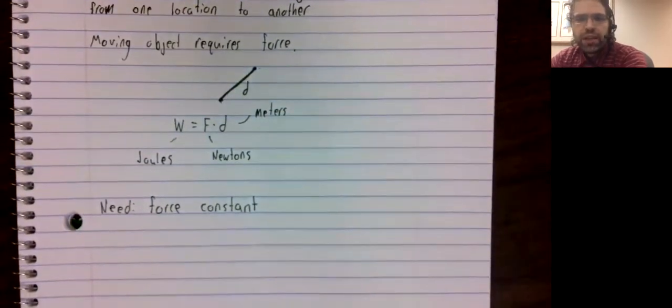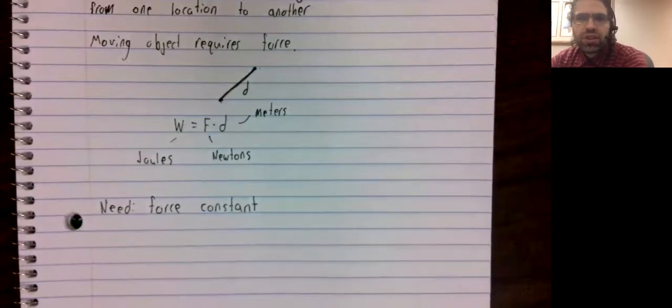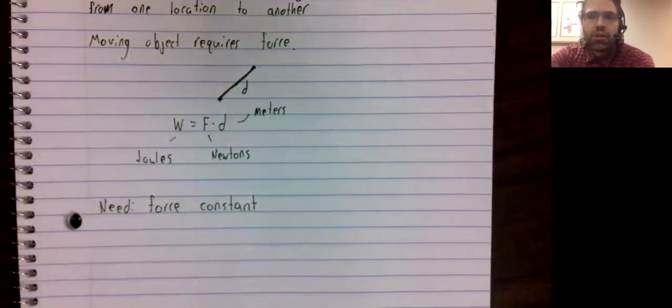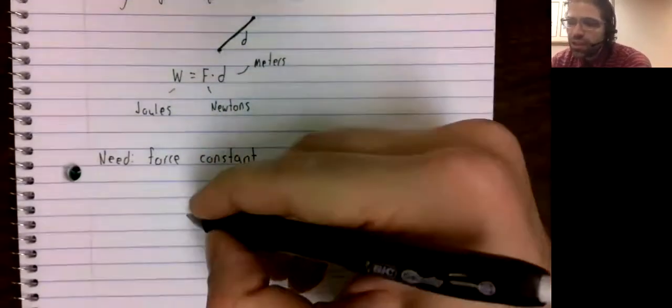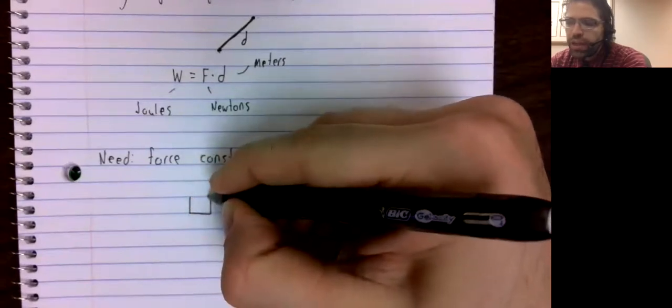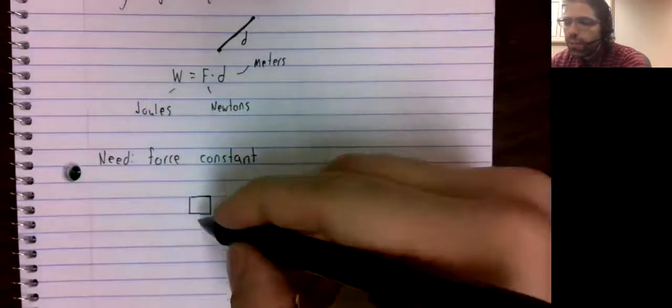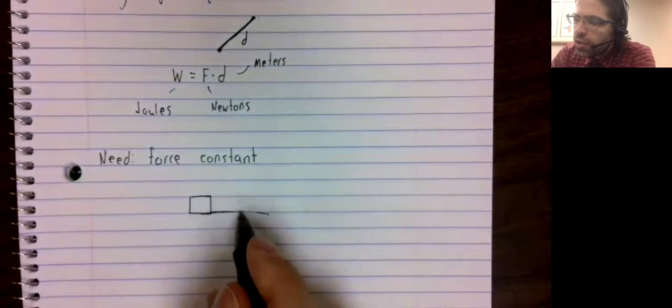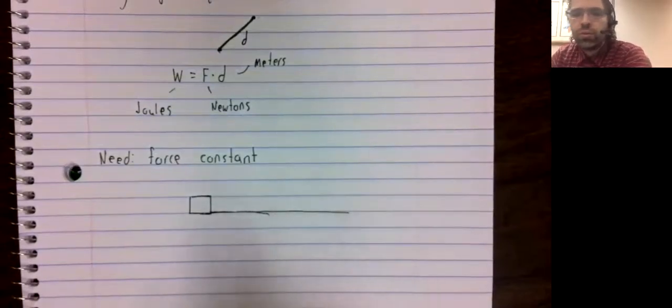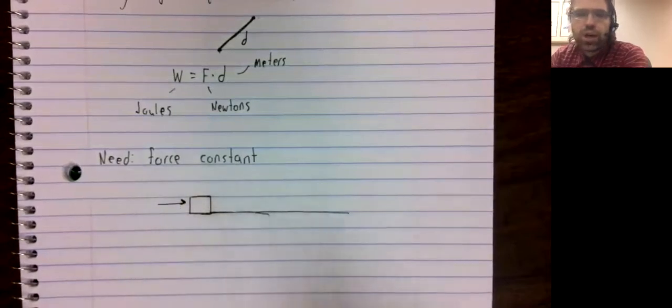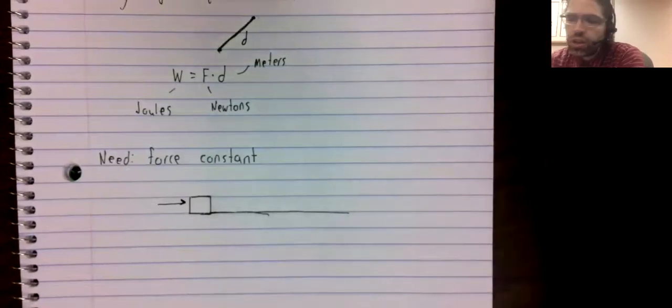And in many real world situations, you might expect the force to be constant, but in many others, it won't be. Let's consider the following example. We've got an object sitting on a horizontal surface, and we are pushing the object to the right.